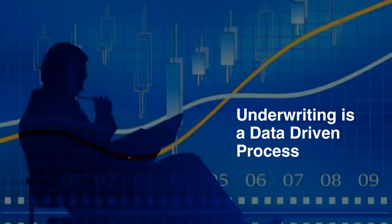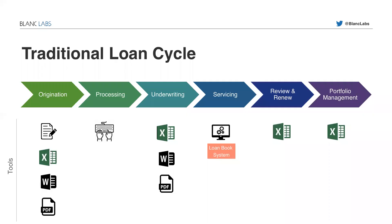Underwriting has always been a data-driven process and still is, whether within the traditional way or digital. Let's look at the traditional loan cycle within this data-driven process. There are six main steps within the traditional loan cycle, as you see on this page: origination, processing, underwriting, servicing, review and renewal, and portfolio management.